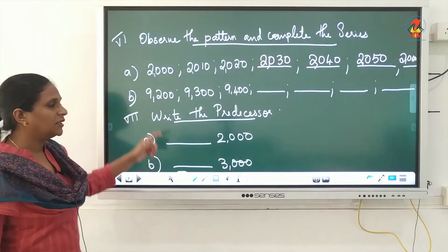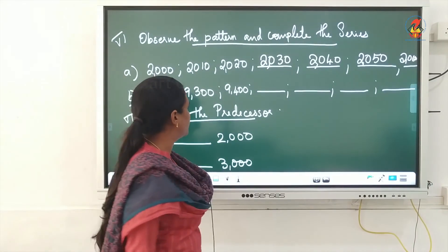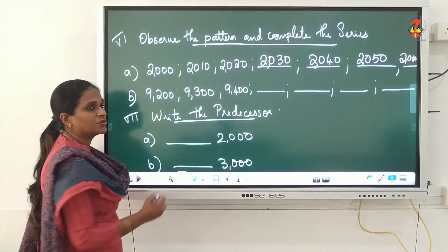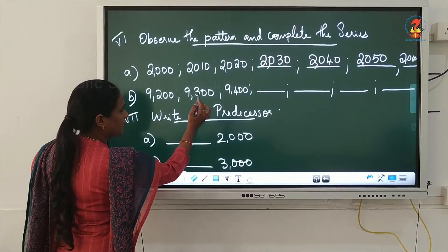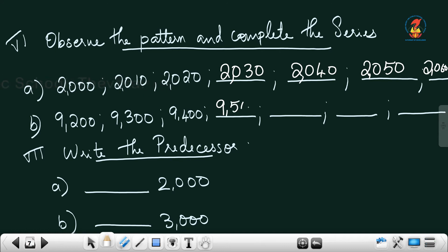Next pattern: 9200, 9300, 9400 — how much is being added each time? 100 is being increased. So the next numbers are 9500, 9600, 9700, and 9800. Correct?